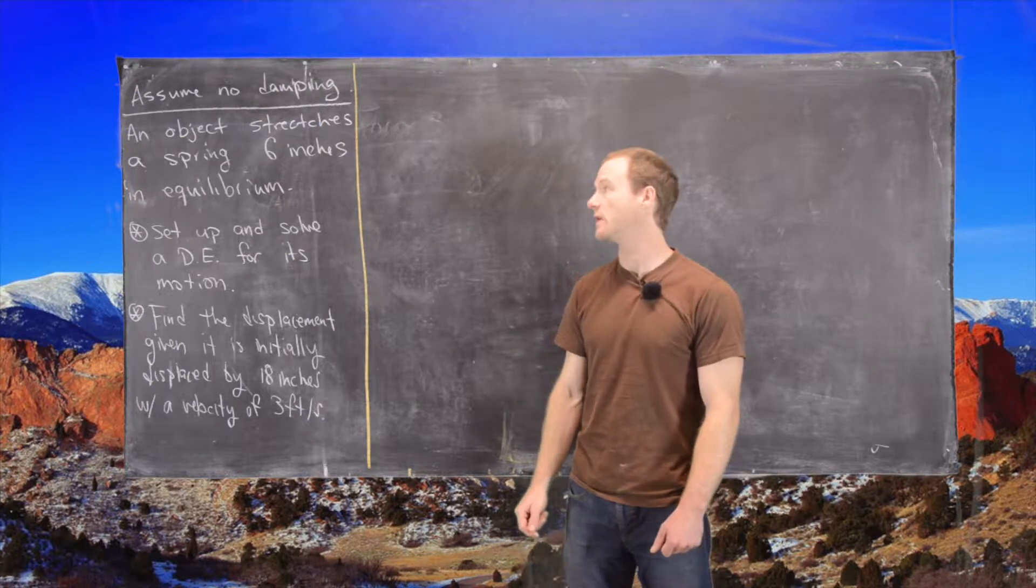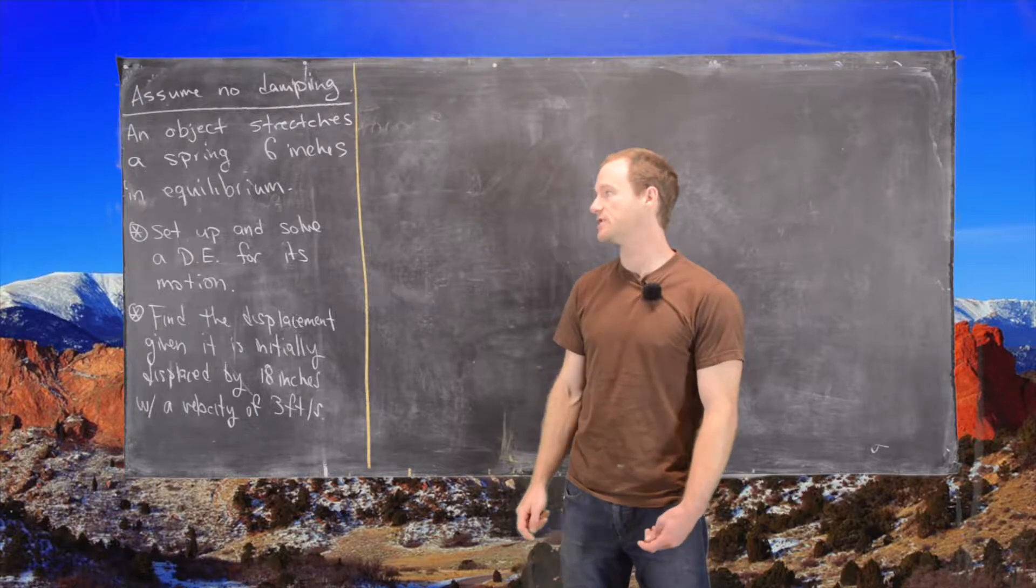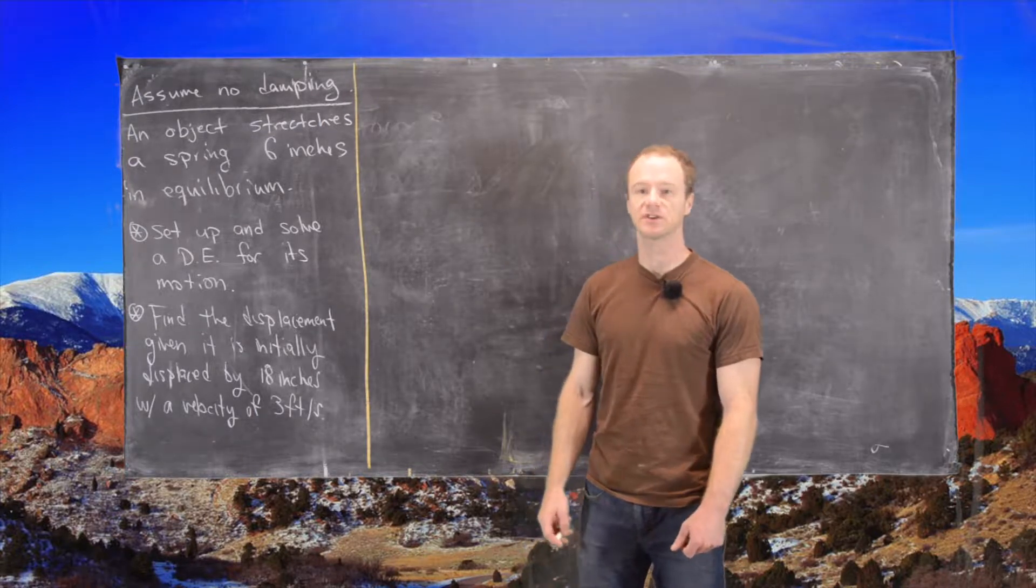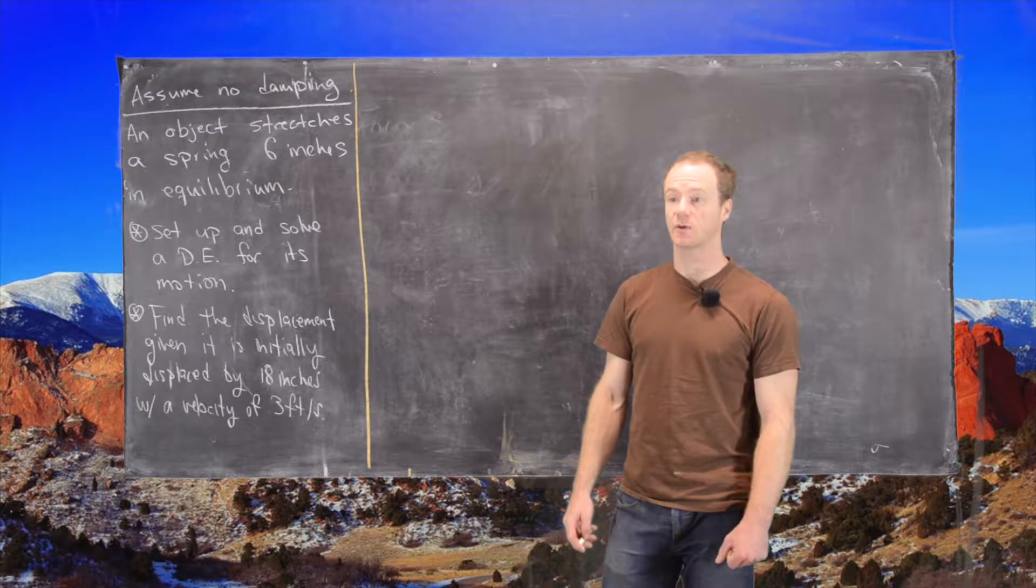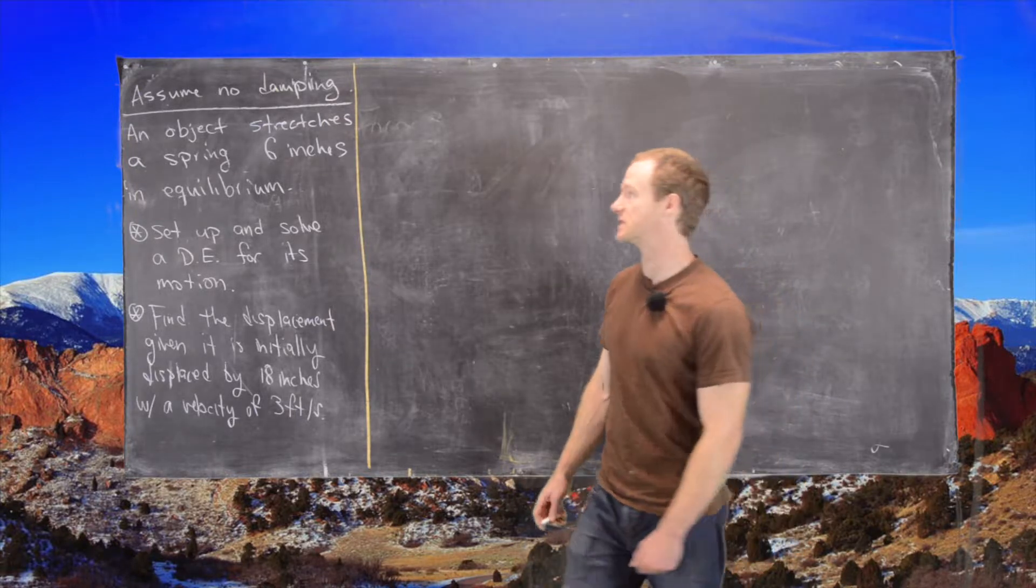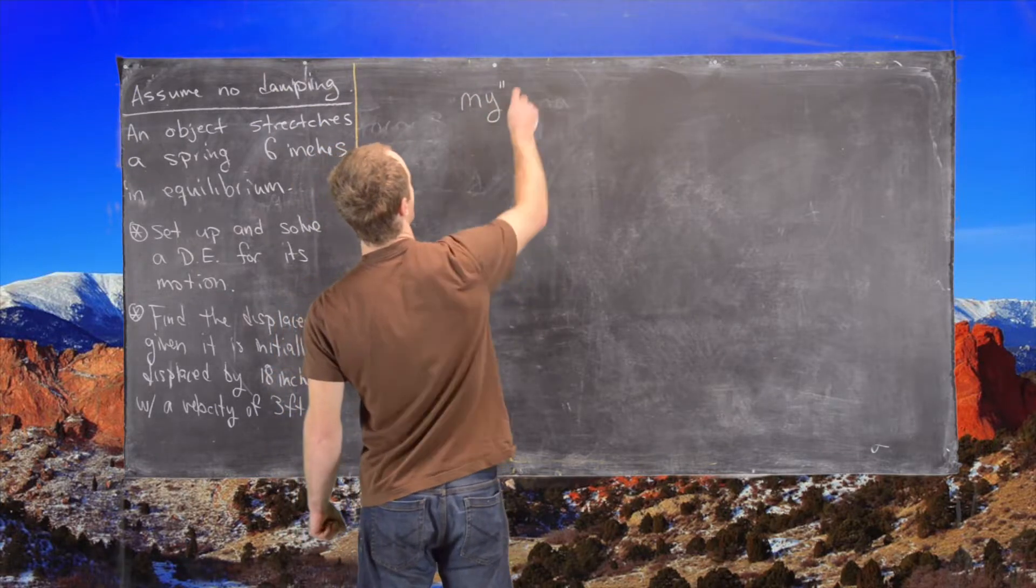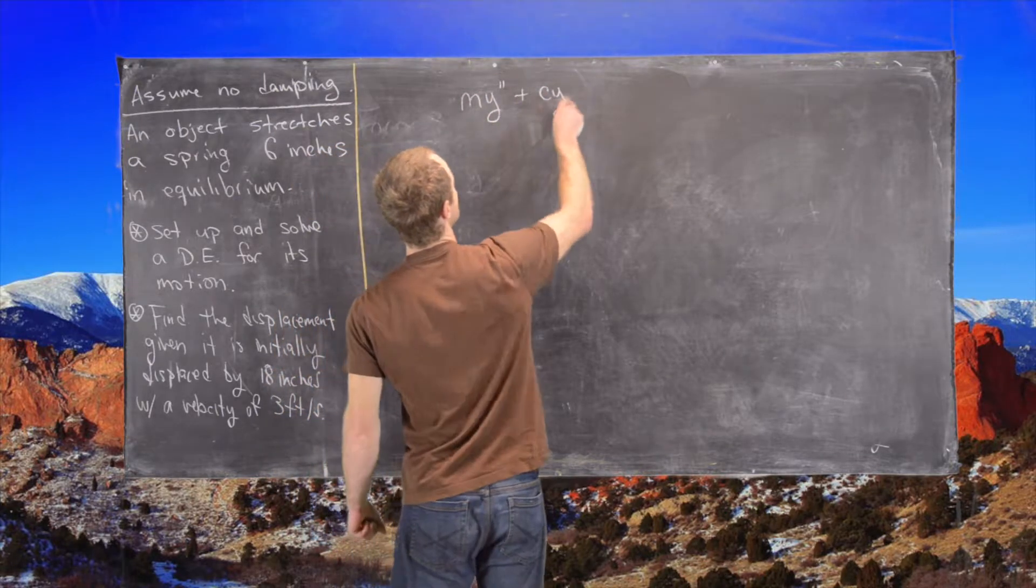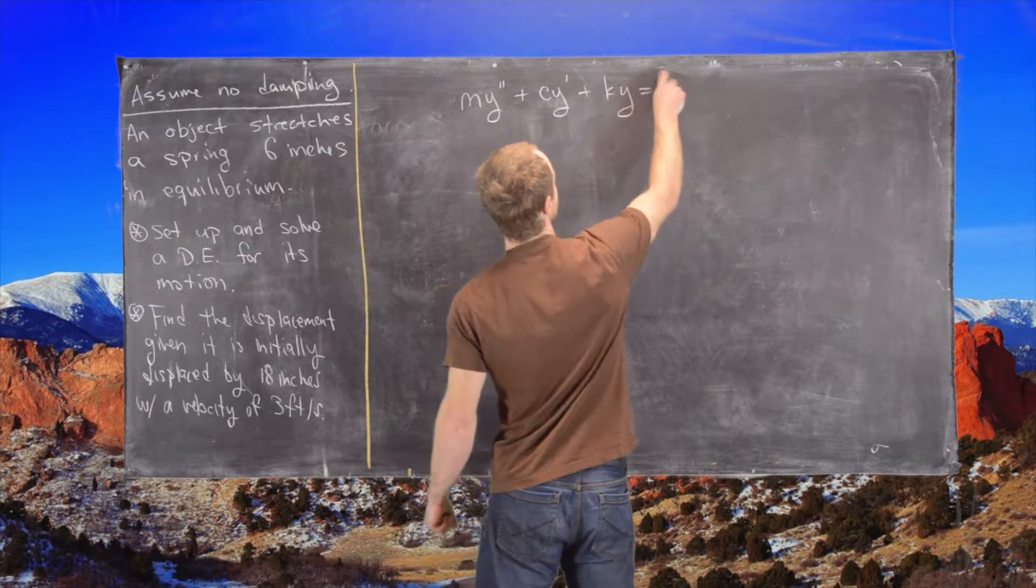Okay, here we're going to look at the following application of a second-order differential equation to a spring system. So let's just recall our general formula for a second-order differential equation in a spring system is given by the following: m y double prime plus c y prime plus k y equals f,